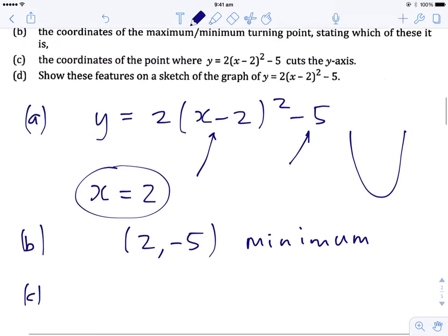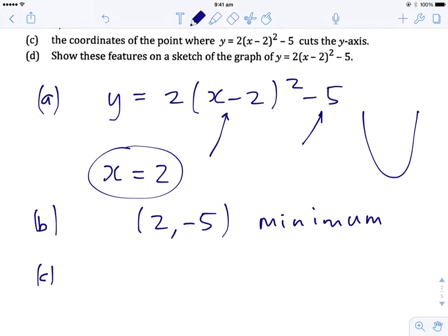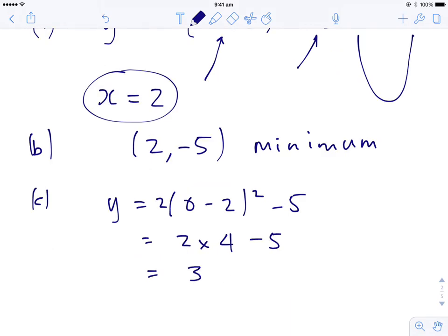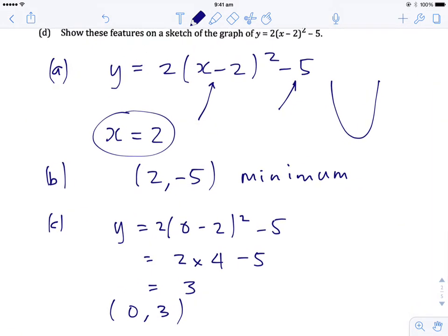For part c, the coordinates to the point where that cuts the y axis. Remember that a curve cuts the y axis when x is equal to 0. So we just replace x with 0 in the equation. 2 times negative 2 squared is 4, gives us 3. So 0, 3 is the coordinates of the y-intercept.